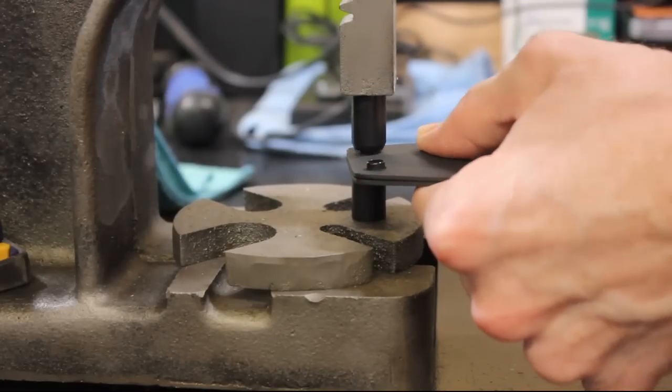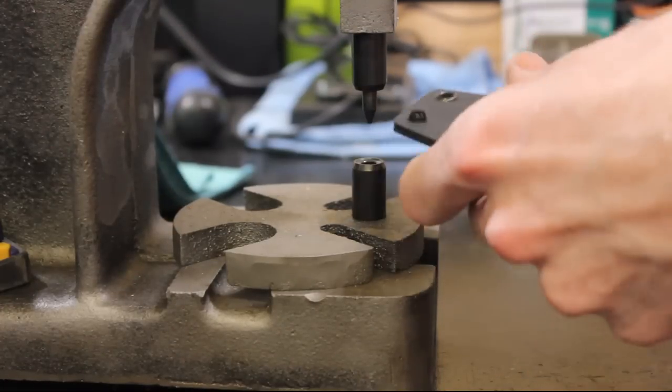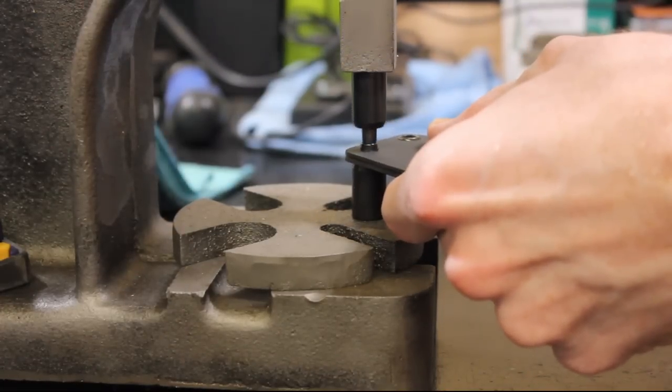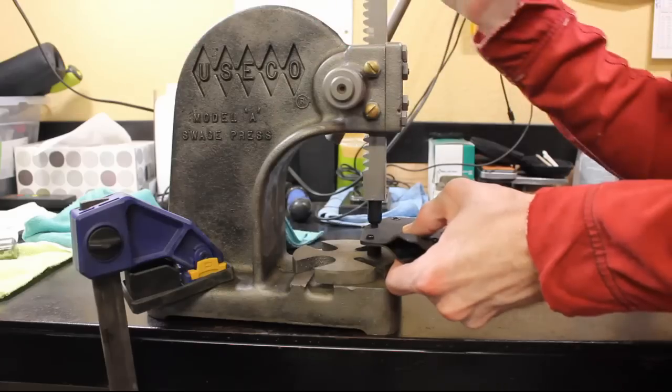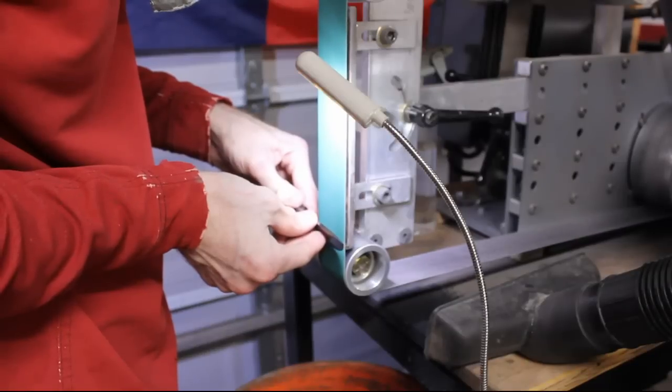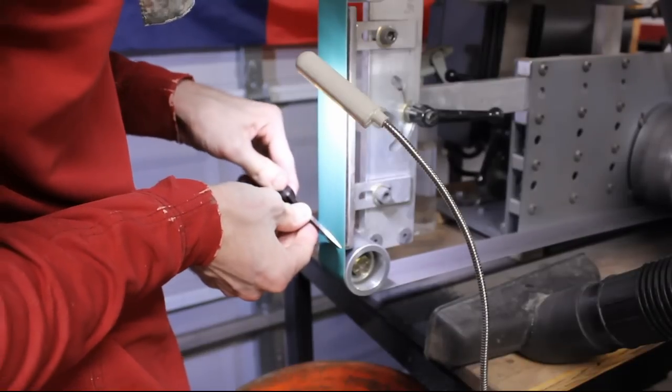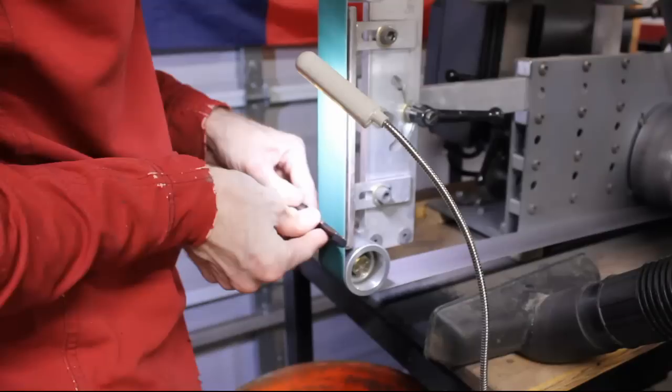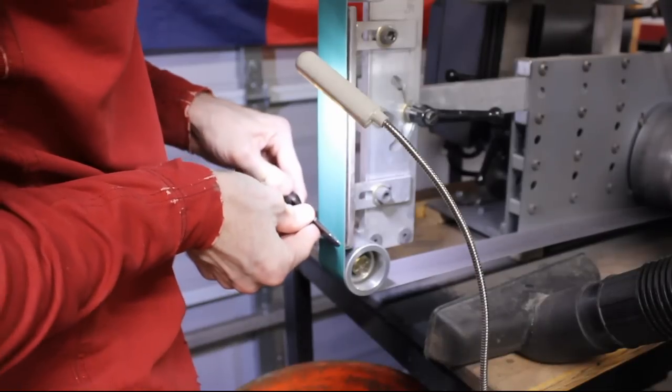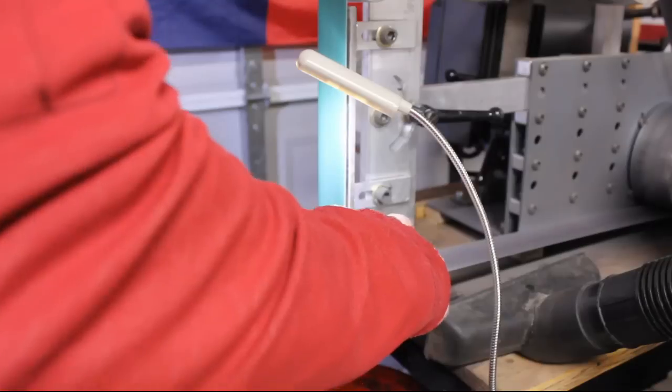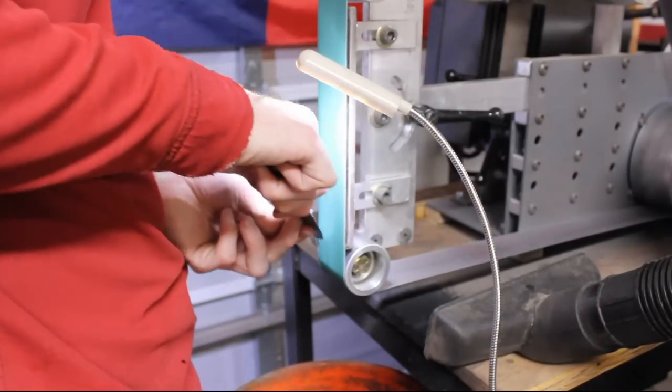Now notice this first eyelet I kind of destroyed there but in general I've really enjoyed having this arbor press with the dies from DIY holster. They've been doing a great job. I went back and I cleaned up that eyelet but it's very rare for me to crush an eyelet on that arbor press.